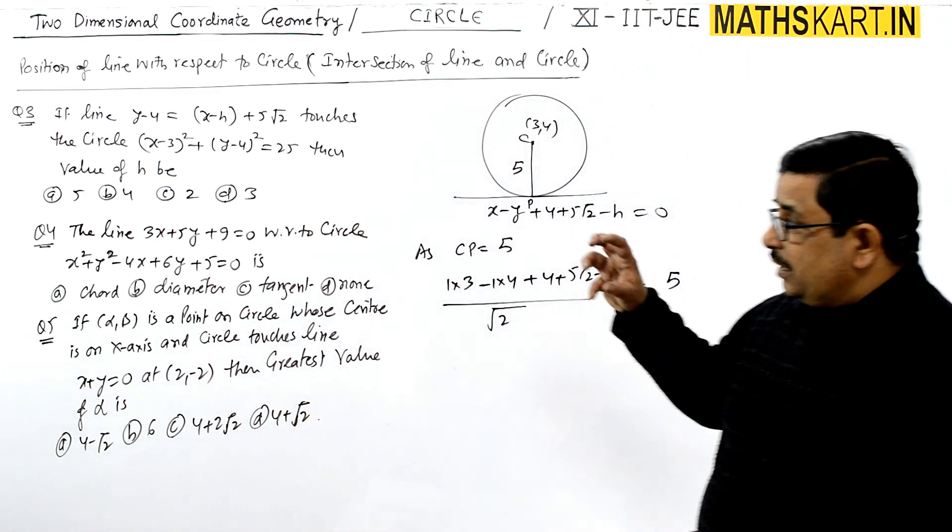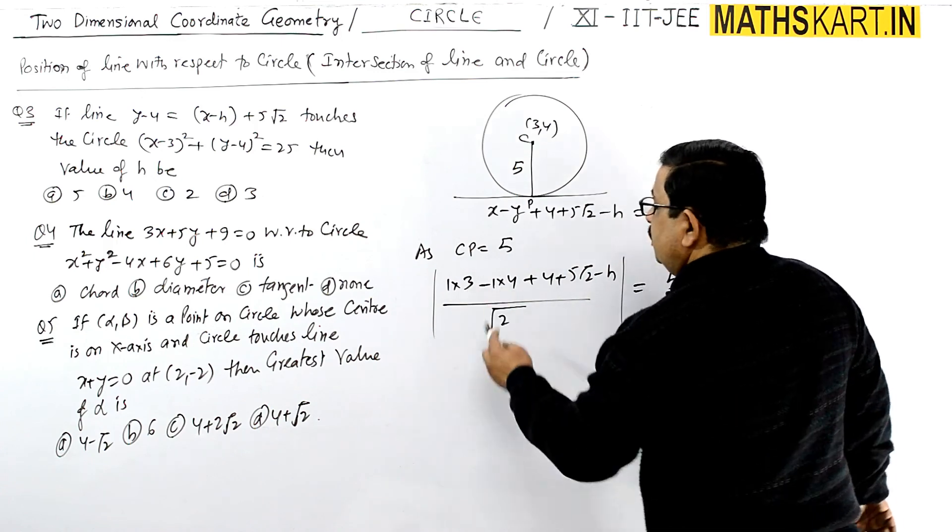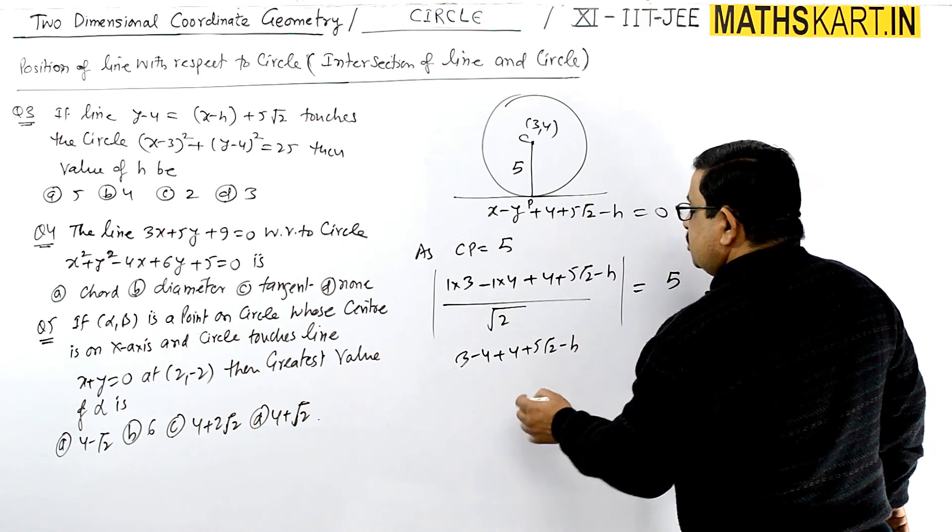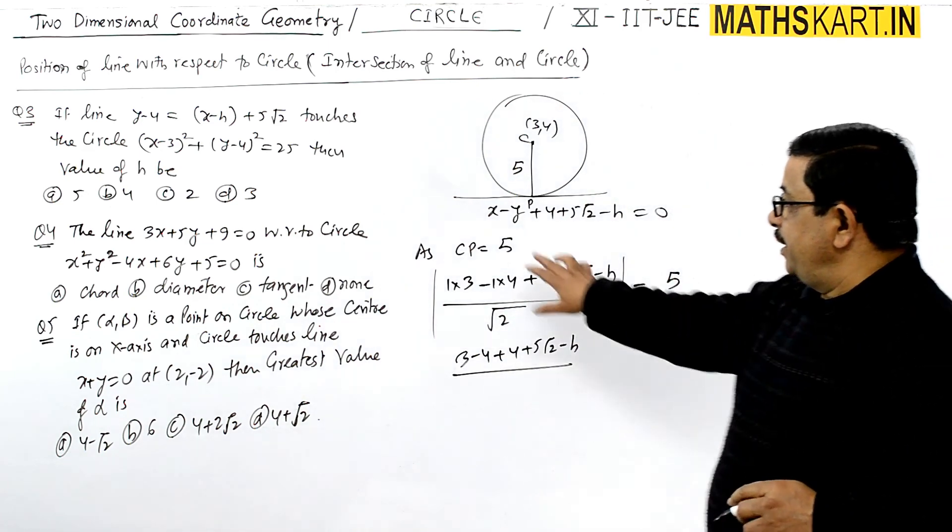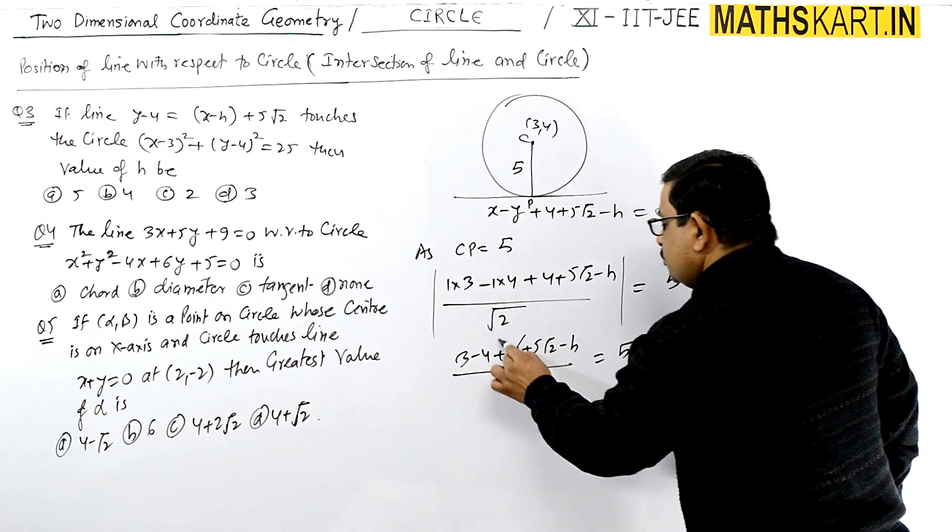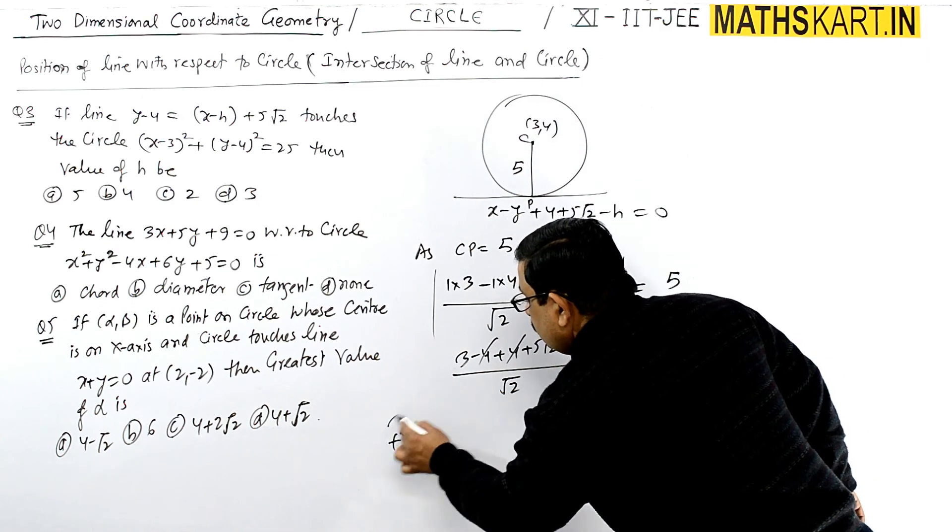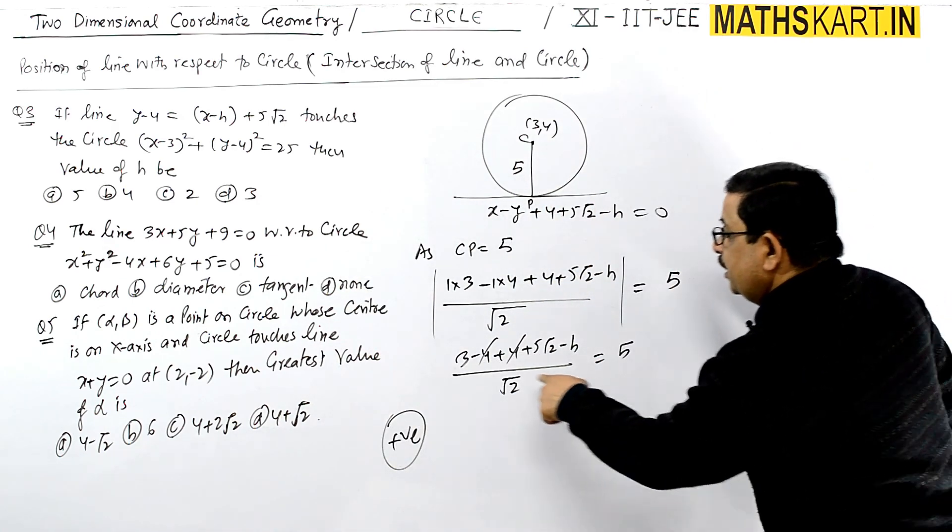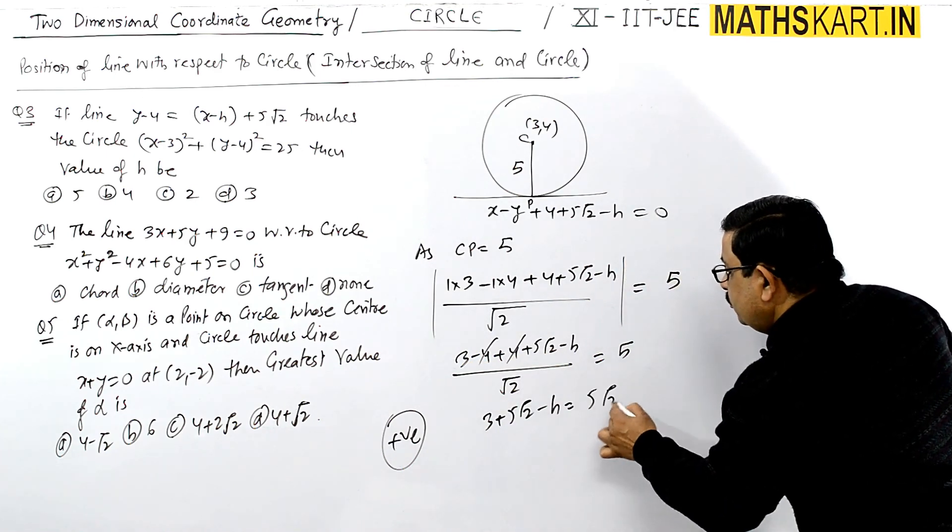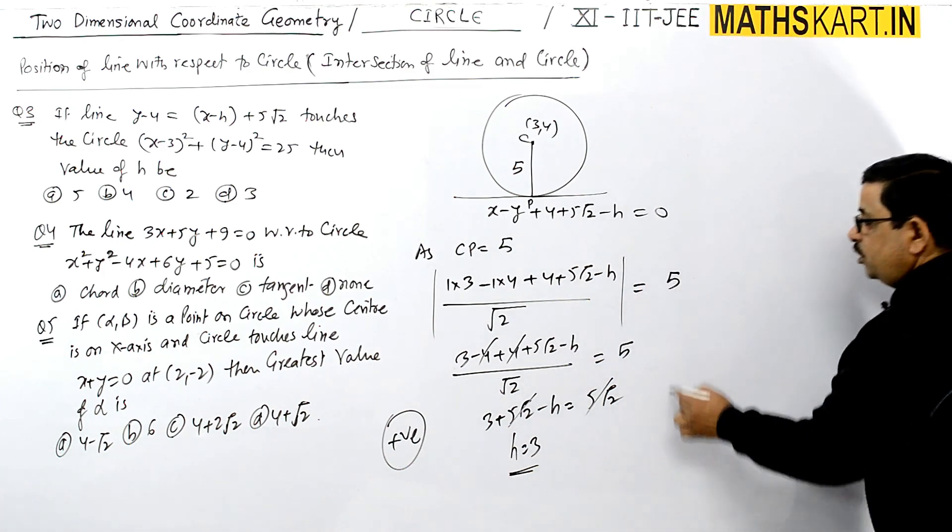Putting the values, you can see what answer is correct. The value becomes (3 - 4 + 4 + 5√2 - h)/√2 = 5. So here, 4 and 4 cancel, and if you take the positive value, this is 3 + 5√2 - h = 5√2. 5√2 cancels, so h equals 3. The value of h is 3, and one value is possible there.